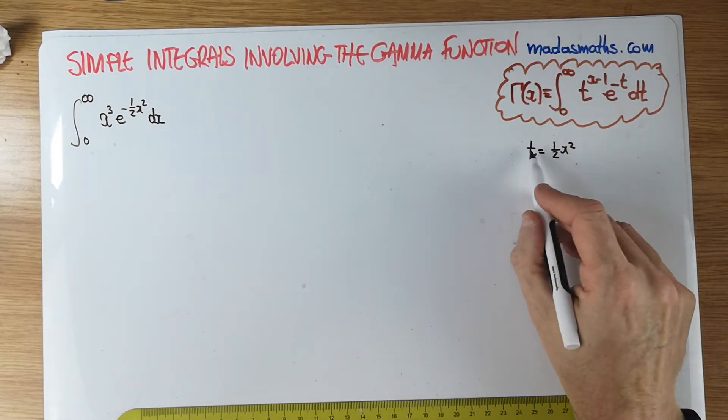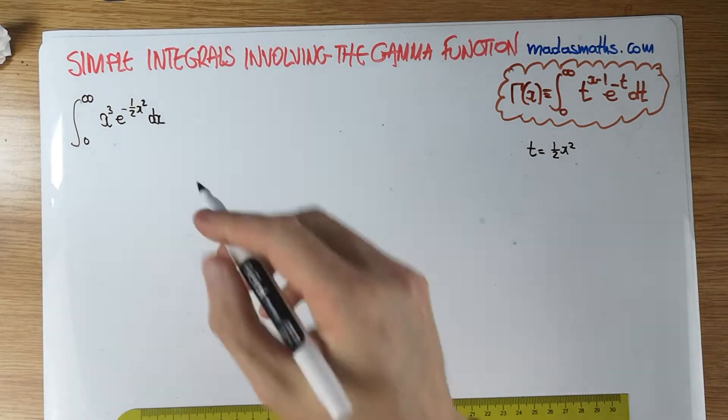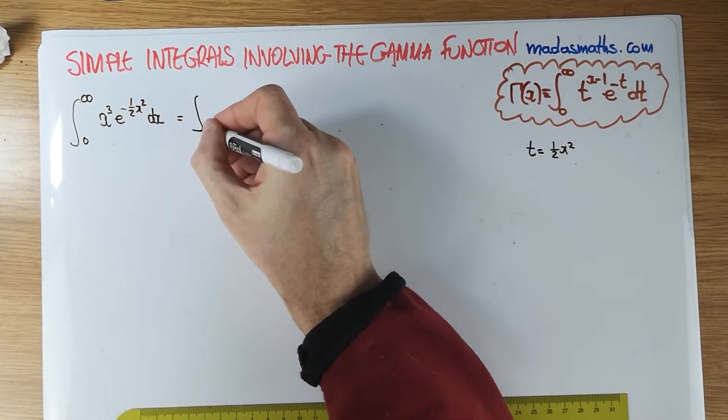Do the limits change? So if x is equal to zero, t is equal to zero, x positive infinity, t is positive infinity. So the limits don't change. So let's just record that.